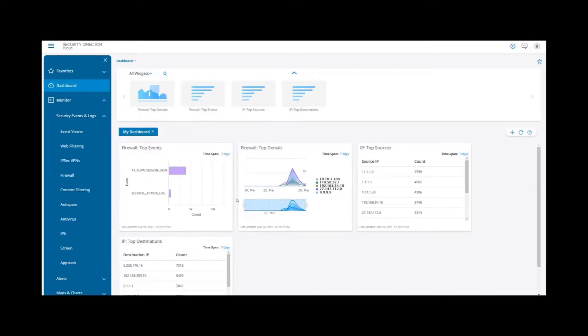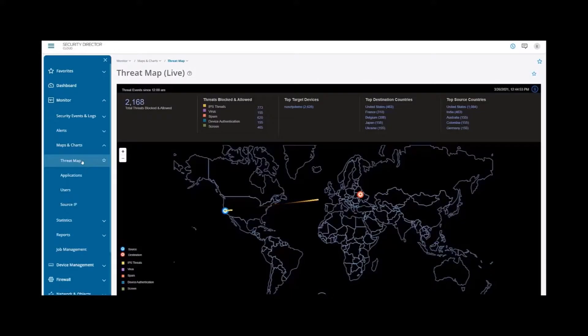For example, I'm going to add a widget that tells me what my top firewall events are across all of my sites, both on-prem and in the cloud. And of course, no security management is complete without a live threat map, where we can see threat sources and destinations that are actively being detected and blocked.